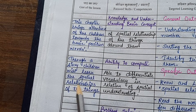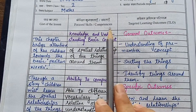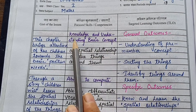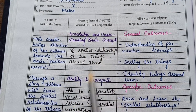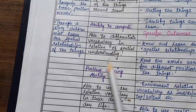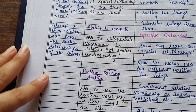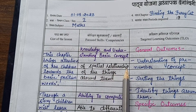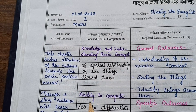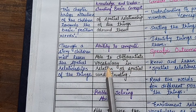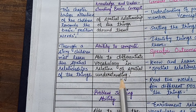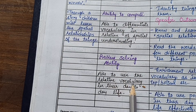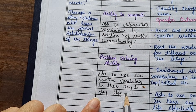Now talking about competencies. In mathematics, we consider three basic competencies. First is knowledge and understanding of basic concepts — specifically, knowledge and understanding of basic concepts of spatial relationships of the things around them. Second is ability to compute — able to differentiate vocabulary in relation to spatial understanding. Third is problem solving ability — able to use relative vocabulary in their day to day life.